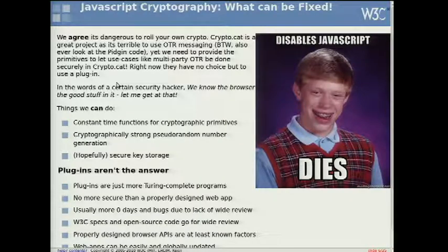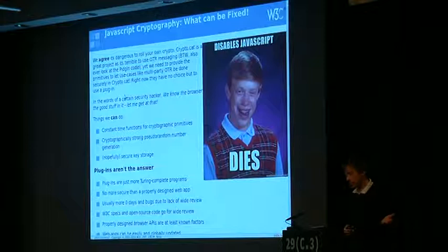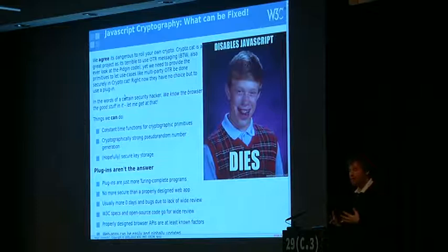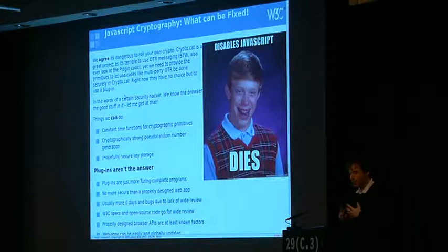Again, I think we need to, as a community of people who are interested in making the web better, provide the cryptographic primitives needed to make use cases like multi-party OTR be done securely in CryptoCat. Now, CryptoCat is still going to be in a plug-in because you could be vulnerable to all of the various attacks that we mentioned earlier. But at the same point, in the words of a certain security hacker who gave, kind of pushed the concept for the W3C to do this: we know the browser has the good stuff in it. Just let me get at that. So again, things we can do: constant time functions for cryptographic parameters, cryptographically secure pseudorandom number generation, and secure key storage.